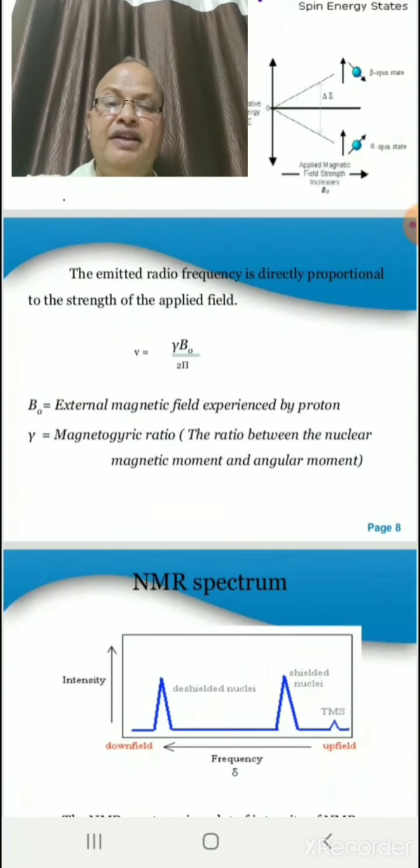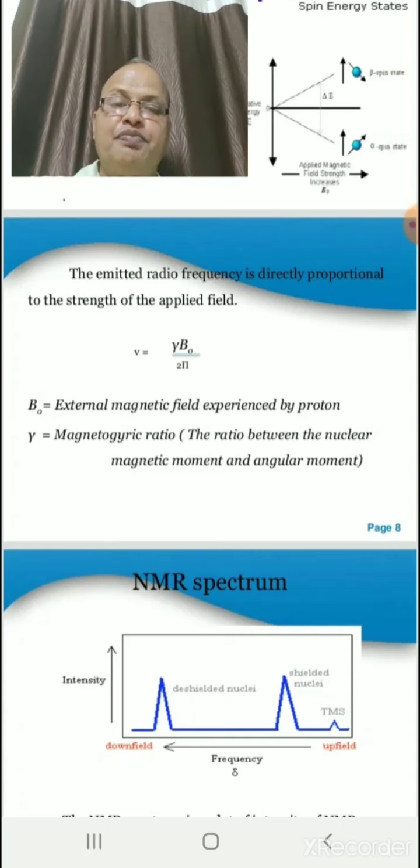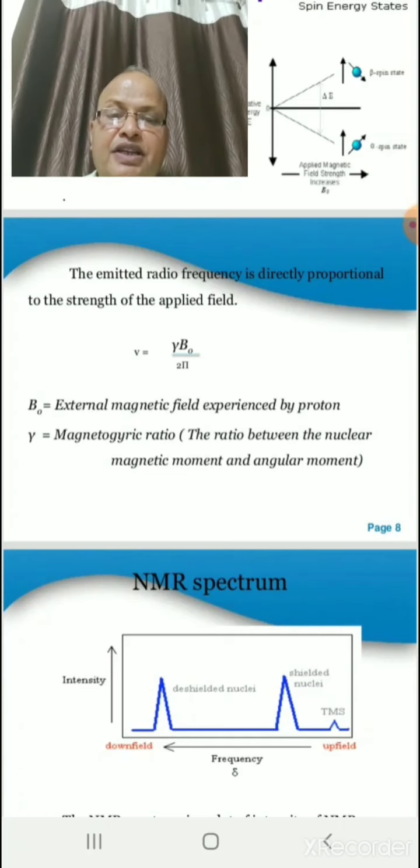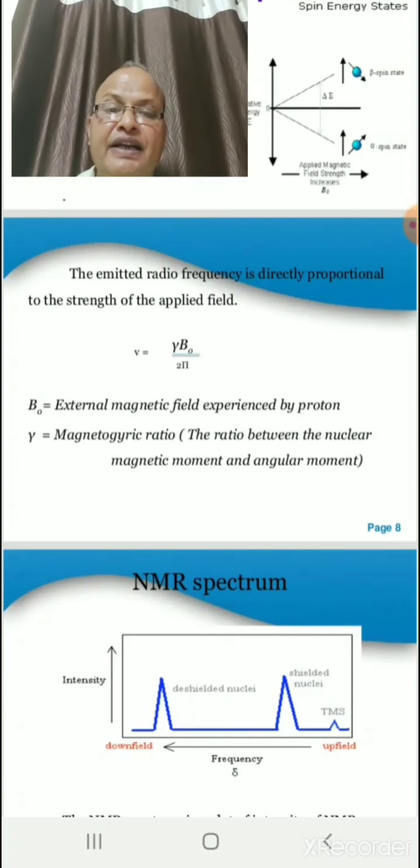And the magnetogyric ratio, that is the ratio between nuclear magnetic moment and angular momentum, can be shown with this NMR spectrum. In this NMR spectrum, we draw a spectrum in between intensity and the frequency.